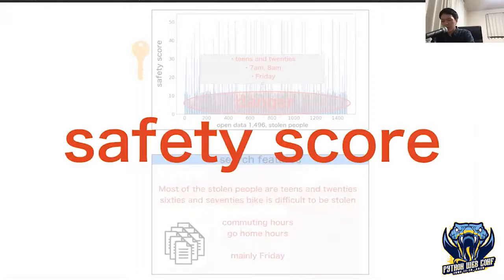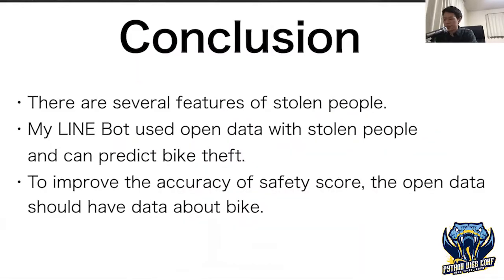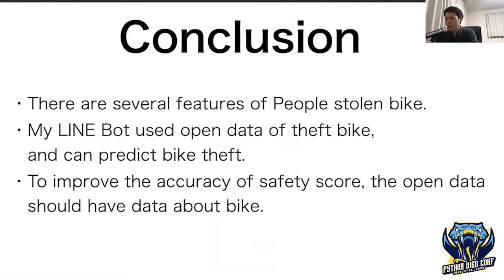Using the safety score by Mahalanobis distance to predict bike theft is valid. In conclusion: there are several features of people whose bikes are stolen. My LINE bot uses open data of stolen people and can help protect against bike theft. In the open data, younger people's bikes are stolen more often — I guess that younger people buy more high-performance bikes. To improve the accuracy of the safety score, the open data should also include data about the bike itself.